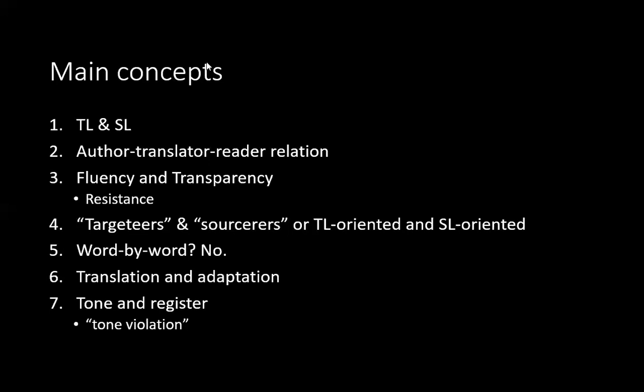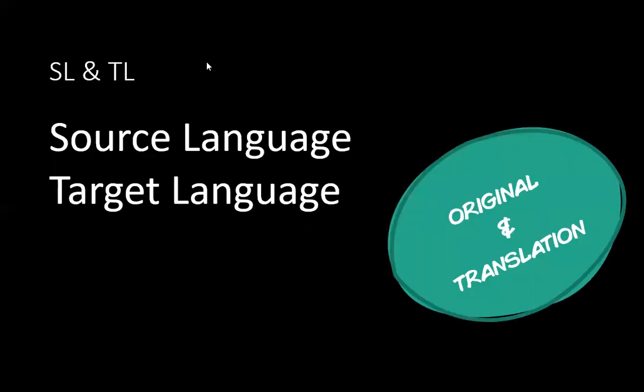Now let's go to the source language and target language. Source language is the language from which a text is going to be translated. The target language is the language to which the text is going to be translated. Or if we use normal people's language, it will be called the original and the translation. I prefer that because it makes more sense, and we will be using those terms throughout this semester, although every now and then I will just use source language or target language.